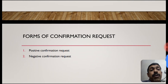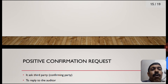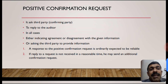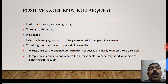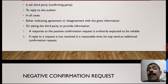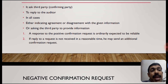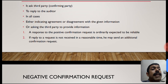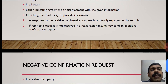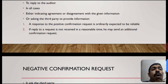Forms of confirmation request: positive confirmation request and negative confirmation request. A positive confirmation request asks a third party to reply to the auditor in all cases - whether the balance is positive or negative - either indicating agreement or disagreement with the given information. The third party may also be asked to provide their own balance. A response to a positive confirmation request is ordinarily expected to be reliable.